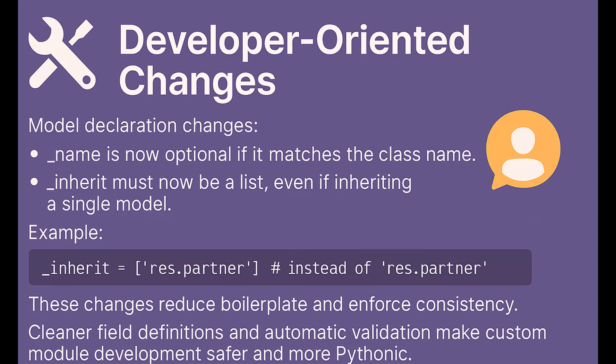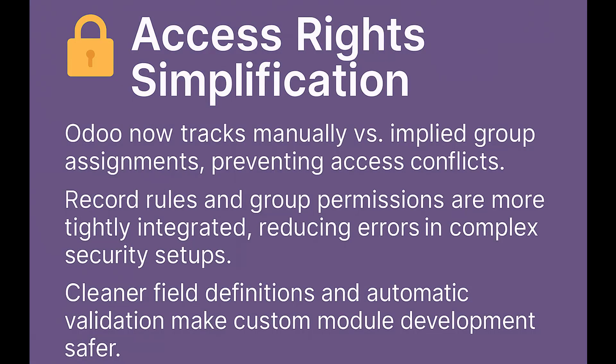Cleaner field definitions and automatic validation make custom module development safer and more Pythonic. Odoo now tracks manually versus implied group assignments, preventing access conflicts. Record rules and group permissions are more tightly integrated, reducing errors in complex security setups.